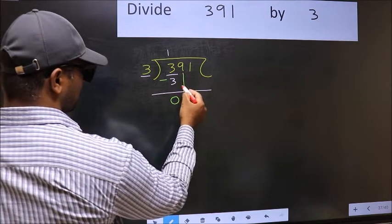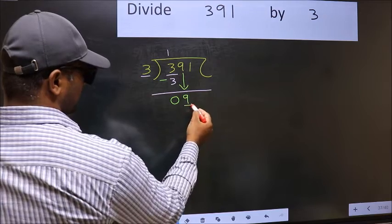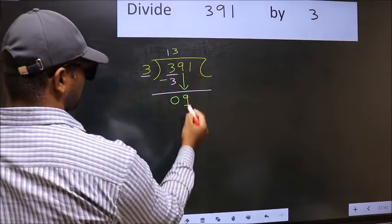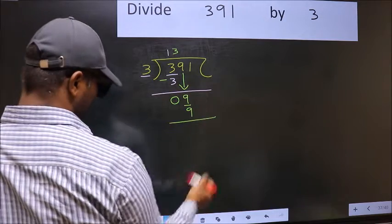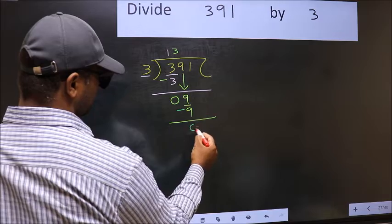After this, bring down the beside number. So 9 down. Now 9. When do we get 9 in the 3 table? 3 times 3 is 9. Now you should subtract. 9 minus 9, 0.